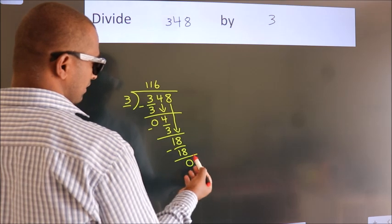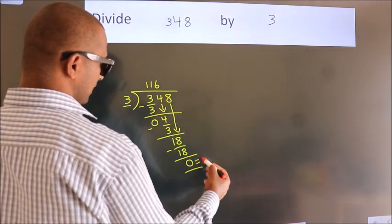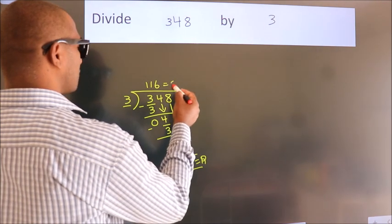After this, no more numbers to bring down. So we stop here. This is our remainder. This is our quotient.